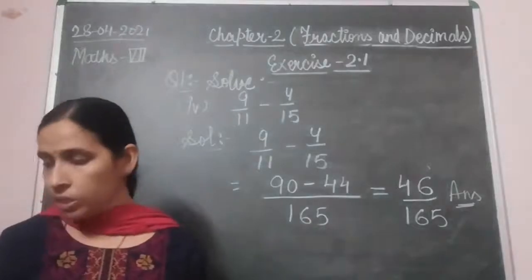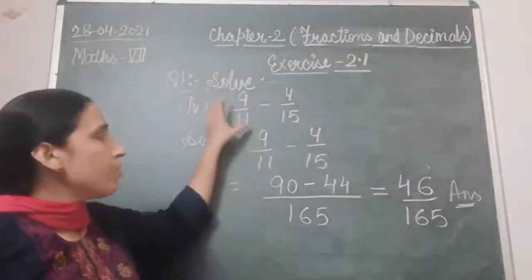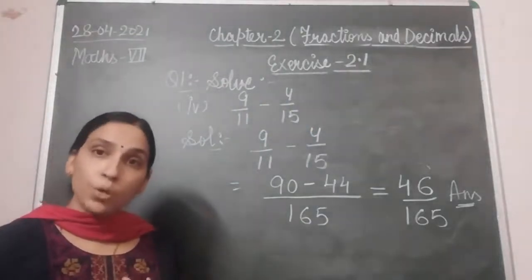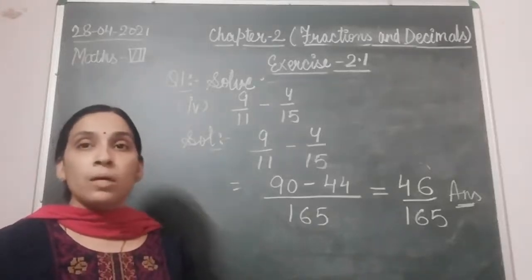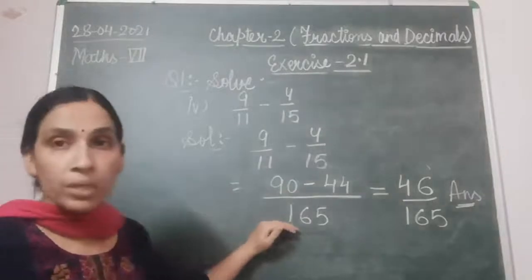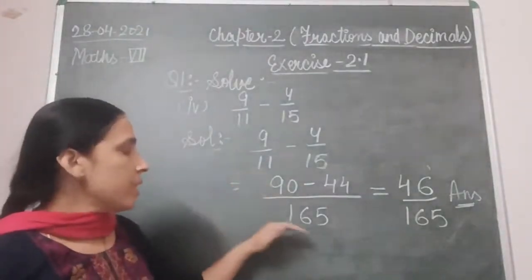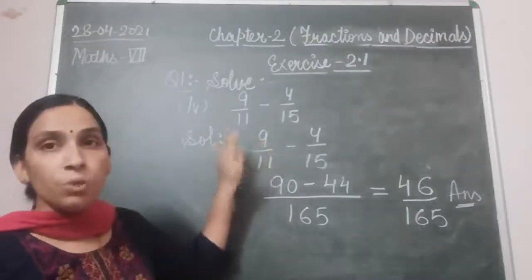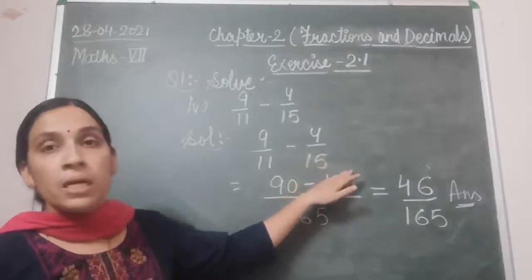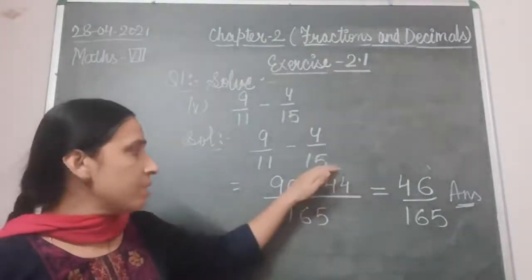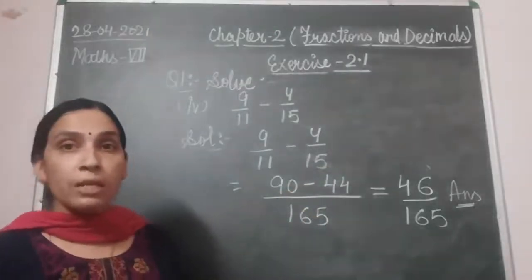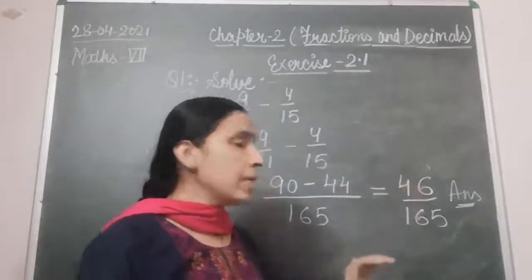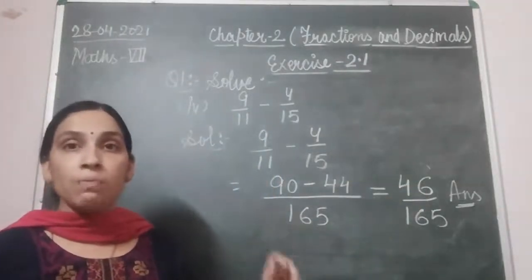In this question, 9/11 minus 4/15: since 11 is prime and 15 is composite but 11 does not appear in the table of 15, the LCM is 11 times 15 equals 165. 165 divided by 11 gives 15, multiplied by numerator 9 gives 135. 165 divided by 15 gives 11, multiplied by 4 gives 44. So 90 minus 44 equals 46/165 is the answer.